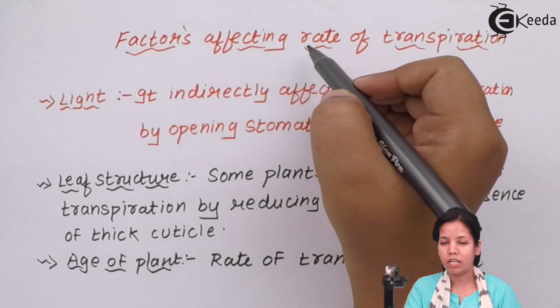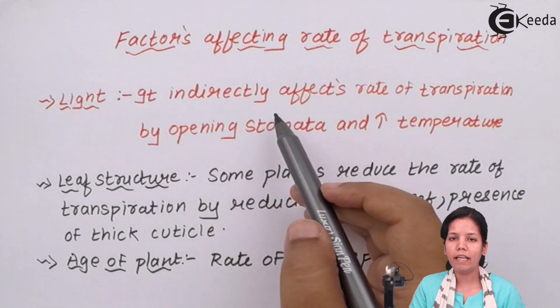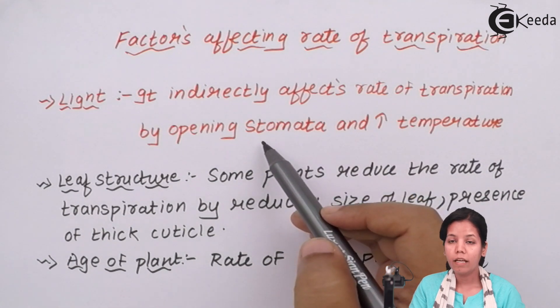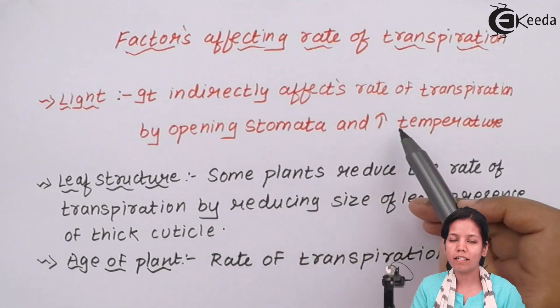The factors that affect transpiration are the major factor light. Now it indirectly affects the rate of transpiration by opening the gates of stomata or guard cells and increasing the temperature.